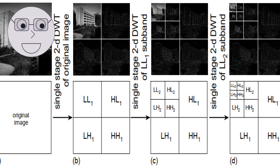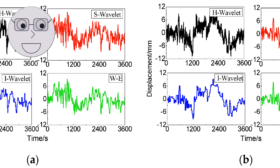Wavelets are used in image compression to compress images without losing too much information. They are particularly useful in applications such as digital cameras and video compression. Wavelets are also used in denoising to remove noise from a signal while preserving its overall trend, and are particularly useful in medical imaging and audio processing.